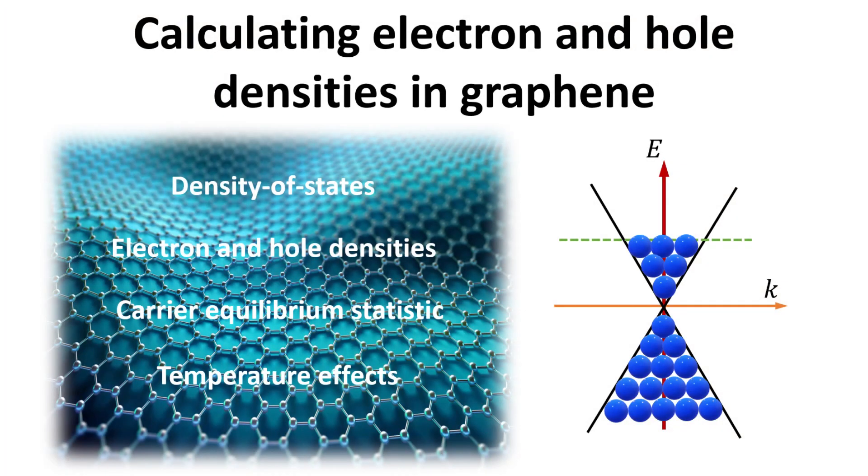In this video, we discuss how one can calculate the electron and hole densities in graphene. We discuss the carrier statistics in graphene, derive its electronic density of states, and the finite temperature electron and hole carrier densities. Let's begin.